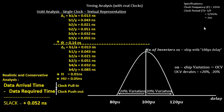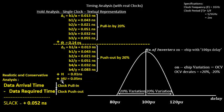Hello everyone. Let's continue and finish off the discussion with OCV timing on hold analysis. The point we concluded in the last video is that we'll be pulling in the data by 20% and we'll push in the capture clock by 20%. So let's draft it over here. We'll pull in all the launch clock network delay by 20% and push the capture clock network delay by 20%, and see what is the impact on this lag.